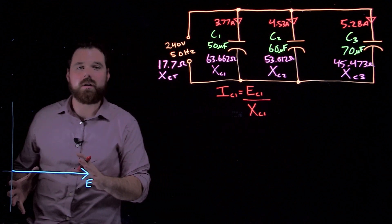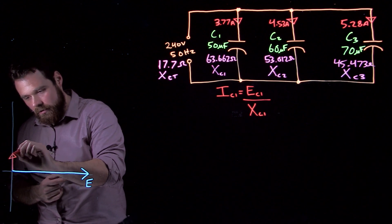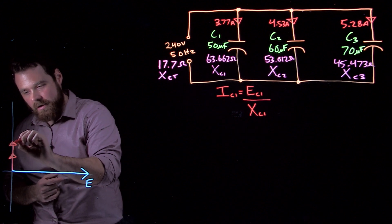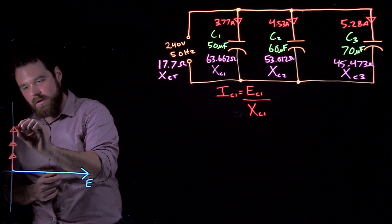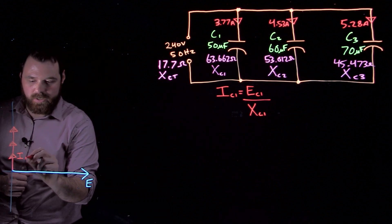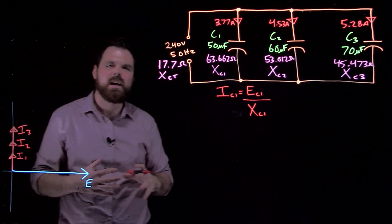So when we go to our phasor diagram here, we're actually going to see our current values drawn at positive 90 degrees. So we'll see I1, I2, and I3, something like that.